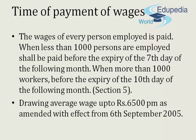Regarding the time of payment of wages: wages of every person employed shall be paid — when less than 1000 persons are employed — before the expiry of the 7th day of the following month; when more than 1000 workers are employed, before the expiry of the 10th day of the following month. Under section 5, drawing average wages up to ₹6,500 per month as amended with effect from 6 September 2005 means that the minimum average wage payable per the 2005 amendment is expected to be ₹6,500.